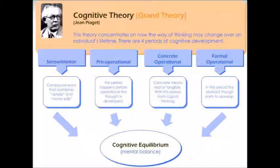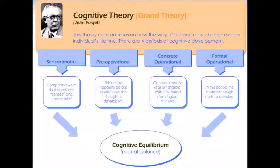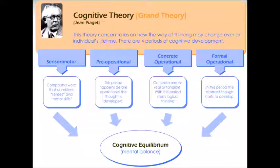Consider cognitive theory as an example of a grand theory. This theory concentrates on how the way of thinking may change over an individual's lifetime. It proposes four periods of cognitive development and deals with cognitive development holistically. The four periods are: sensory-motor, pre-operational, concrete operational, and formal operational.